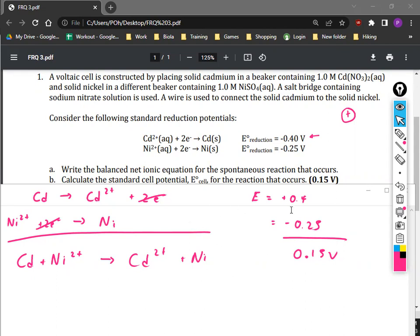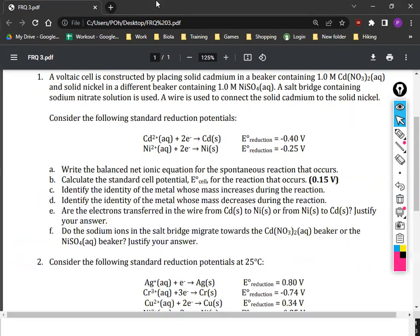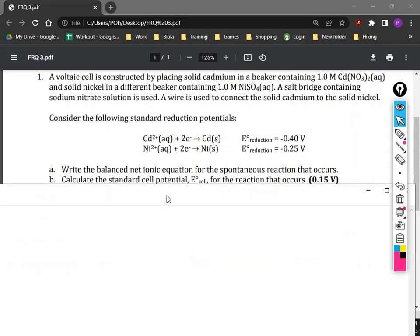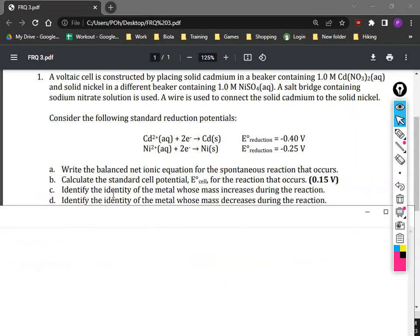All right. So let's move on. So if we take a look at this system, we have our cell, right? We want to figure out the identity of the metal whose mass increases during the reaction and the mass of the metal that decreases during the reaction. So let's take a look at the voltaic cell and let's draw it. I want you guys to actually take a minute to draw the cells. It's going to be the same system that we looked at.